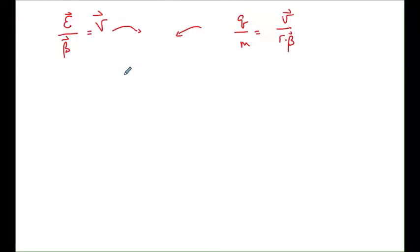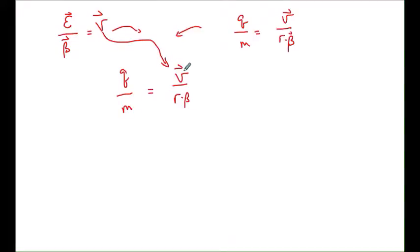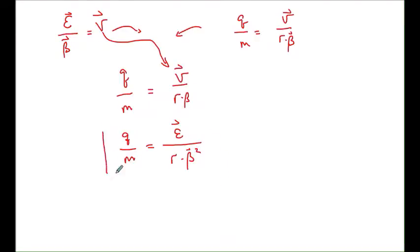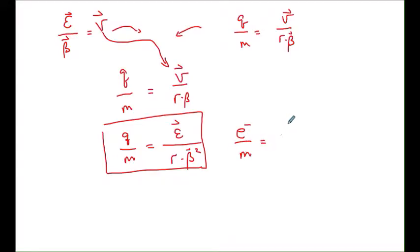Combining both equations: q/m = v/(rB), and substituting v = E/B, we get q/m = E/(rB²). This was an extremely important discovery. It was found that the charge-to-mass ratio of the electron equals 1.76 × 10⁻¹¹ coulombs per kilogram.